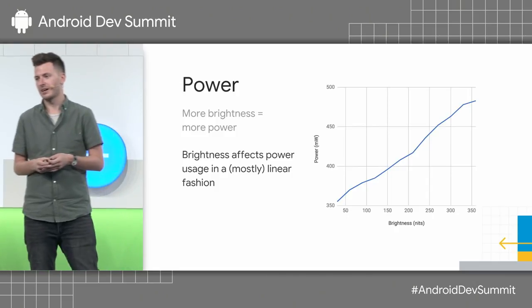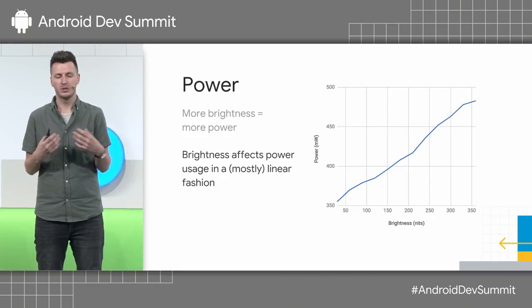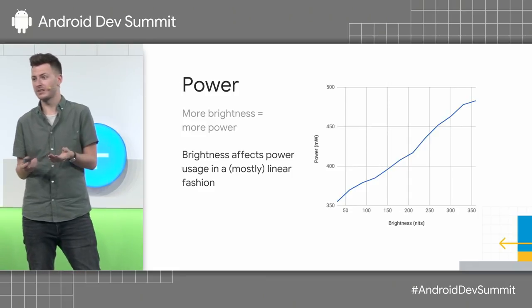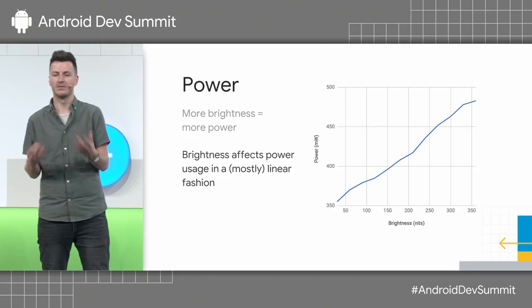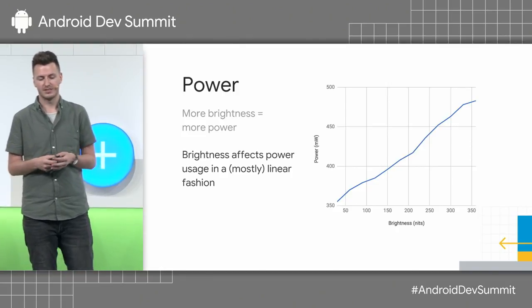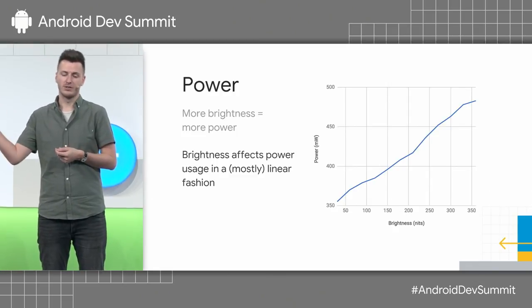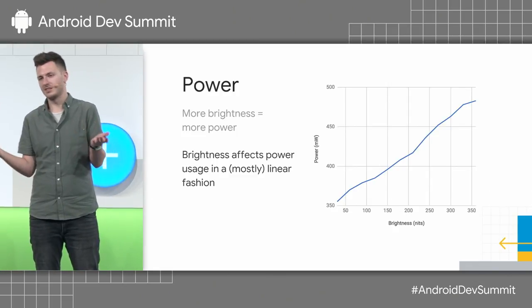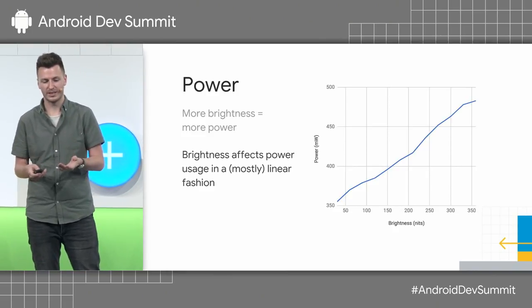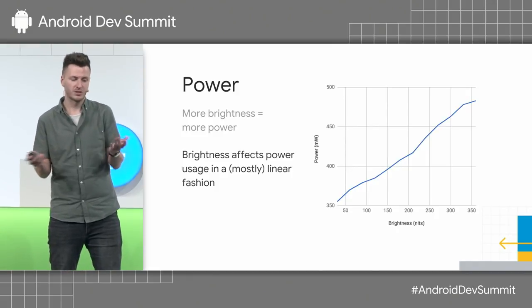We've done a lot of stats over the past year or two, because we know that users care deeply about their battery life, and the display tends to be the biggest power user of your device. A straightforward chart shows that the higher the brightness on your display, the more power it uses. It's actually quite linear — kind of simple, but important.